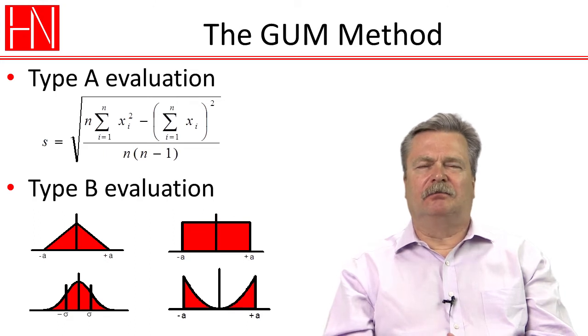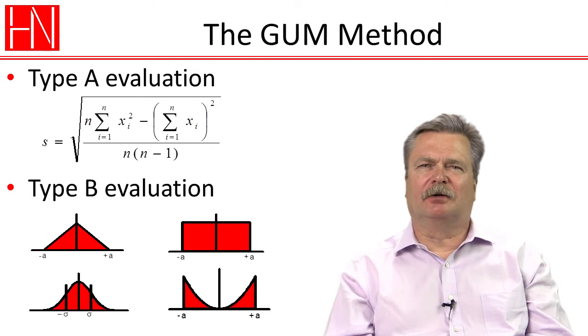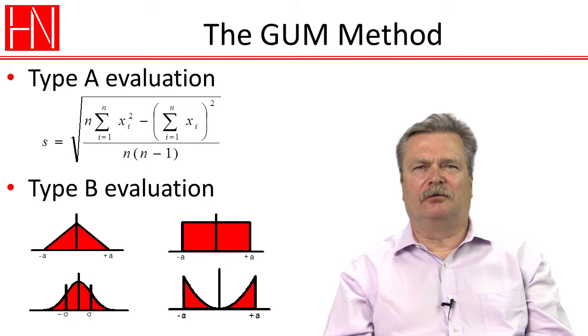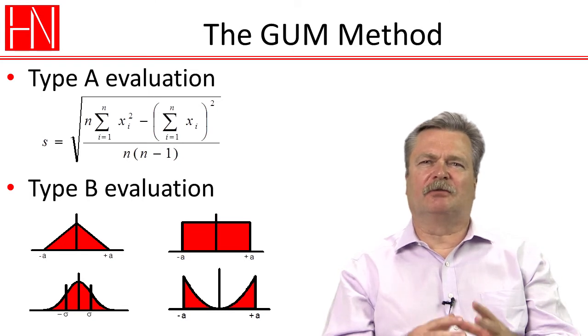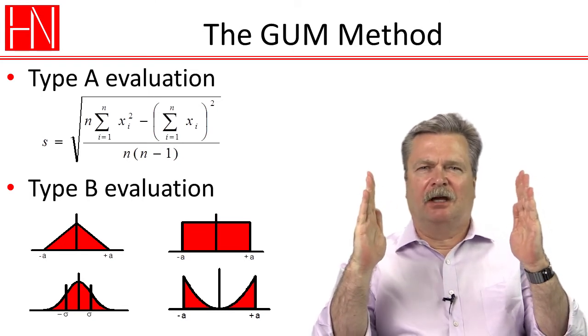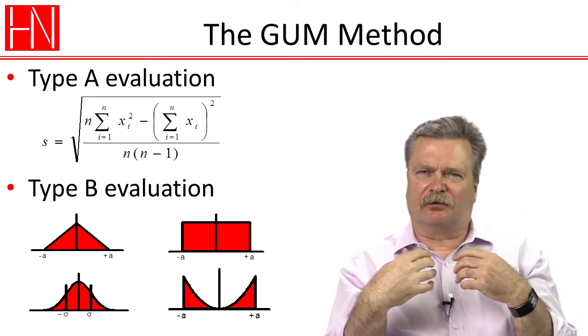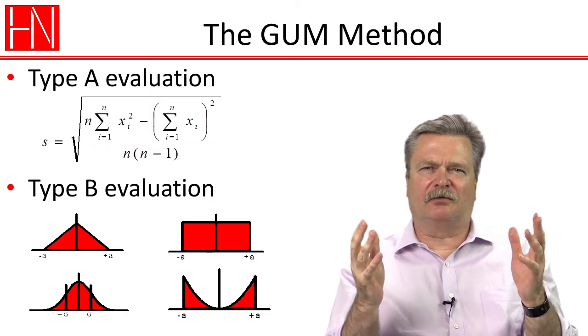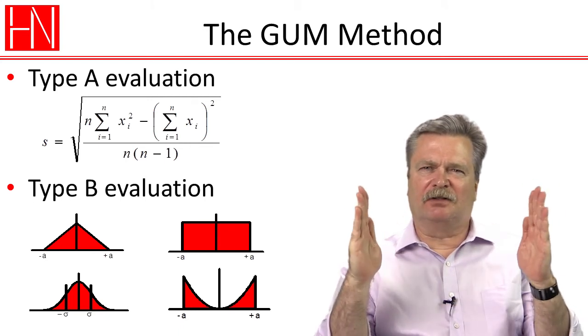And then the other way of estimating uncertainty contributors, and the one that probably was the most revolutionary when the GUM method was first put forward, was the Type B evaluation, where the way we evaluate the uncertainty contributor is that we come up with a set of variation limits. Either from prior knowledge or from manufacturer specifications or from information in a calibration certificate or any other information that's available to us, we can come up with a set of limits.